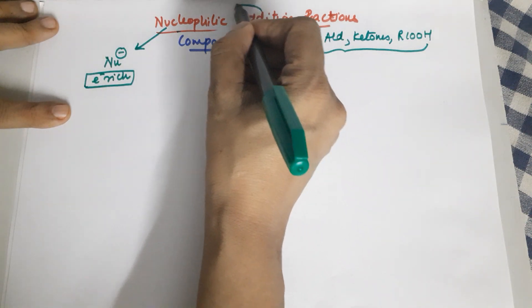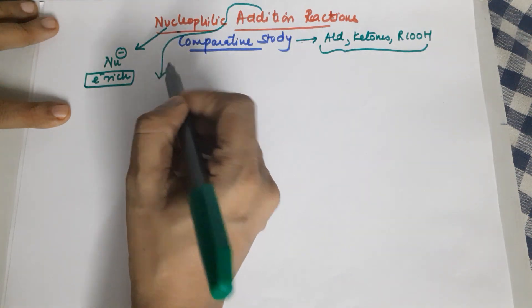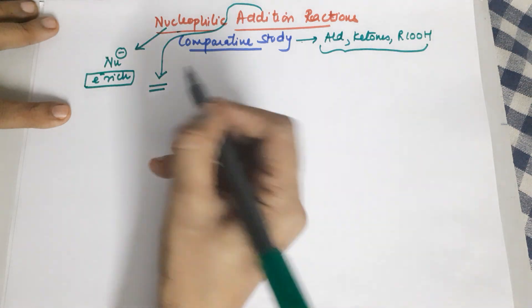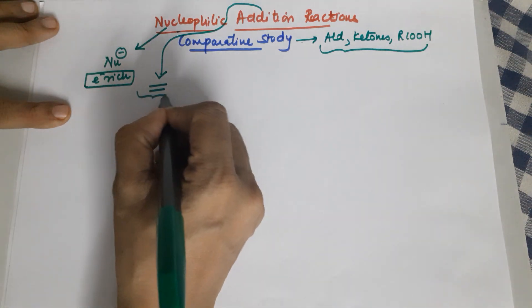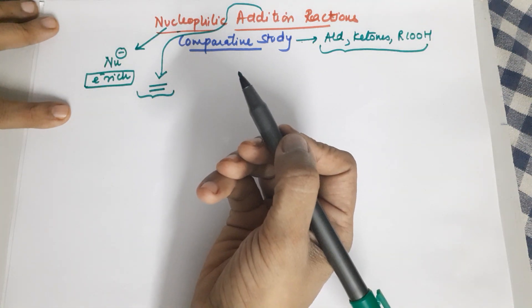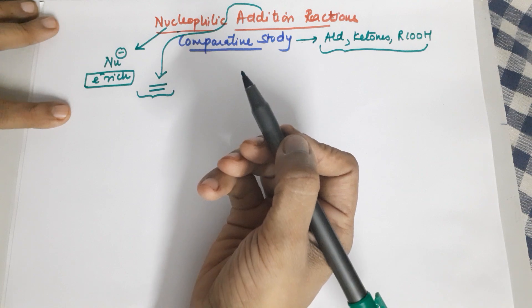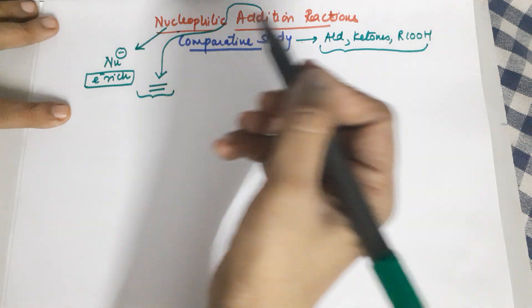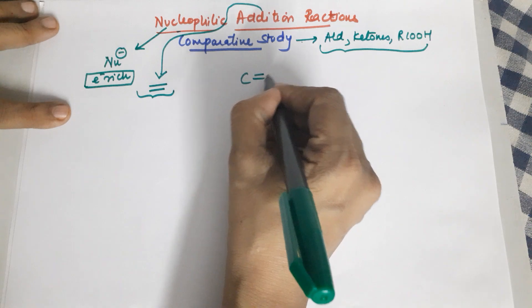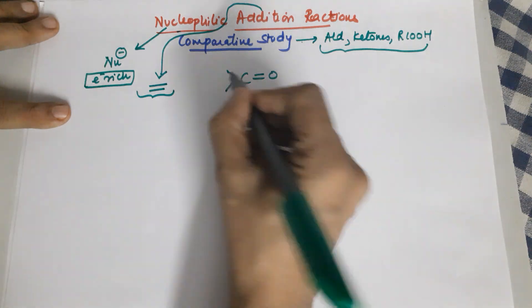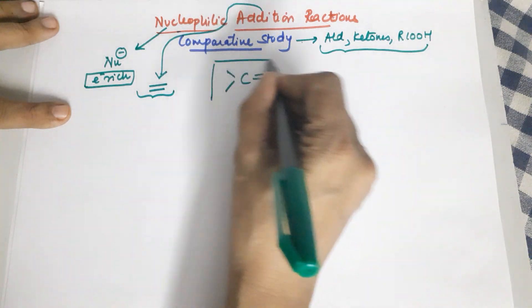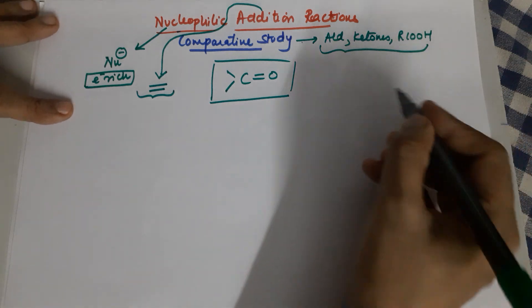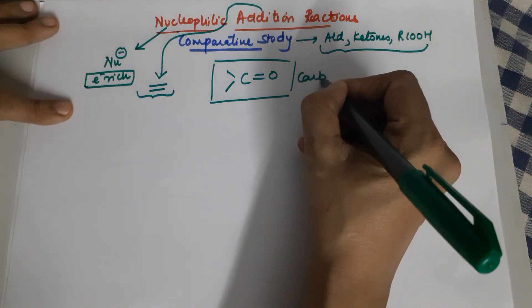An addition reaction is only possible whenever there is a double bond. So we have to look for a double bond where carbon is positively charged. Generally, this nucleophilic addition reaction is a property of compounds that have a carbonyl unit — these are called carbonyl compounds.